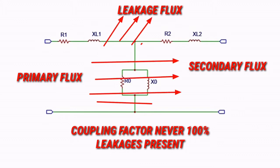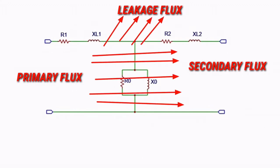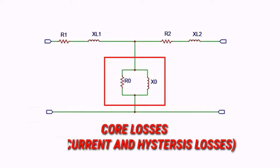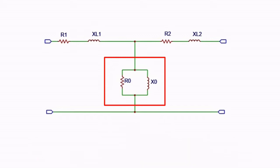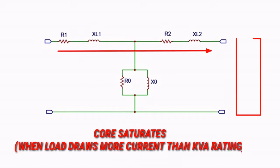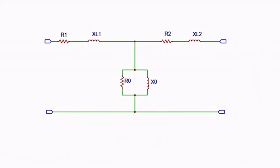reaches the secondary. There are always some leakages. Finally, RO and XO are the core losses—eddy current and hysteresis losses. Hysteresis losses come into picture when the core saturates or begins to saturate, which means the core heats up too much and can cause a catastrophe. So in order to save the core from saturation,